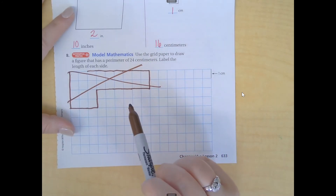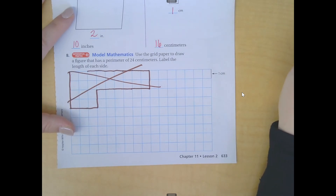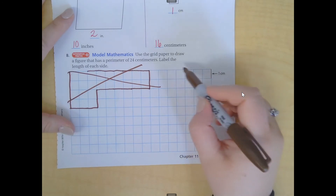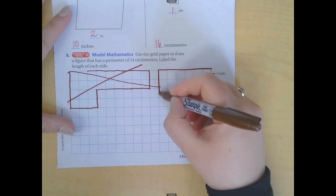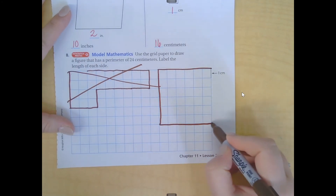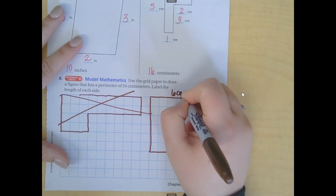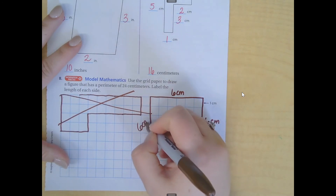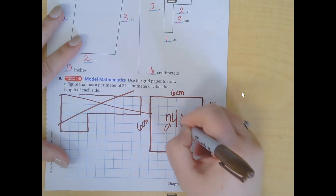What numbers could we use to add up to twenty-four? Well, I could use a perfect square — a perfect square has four sides that are the same length. What if each side is six? Because six times four is twenty-four. So if I have a perfect square with six centimeters on each side: six and six is twelve, twelve and six is eighteen, plus another six is twenty-four. This figure is twenty-four centimeters.